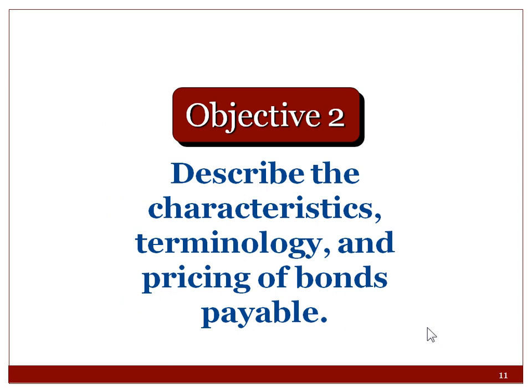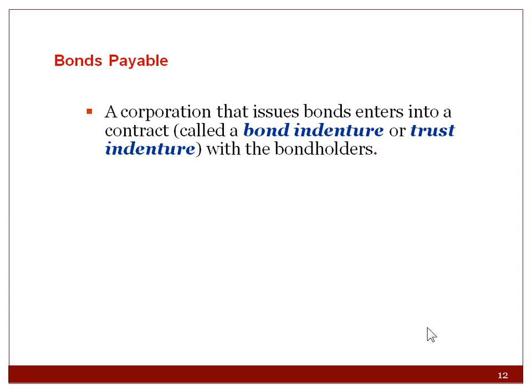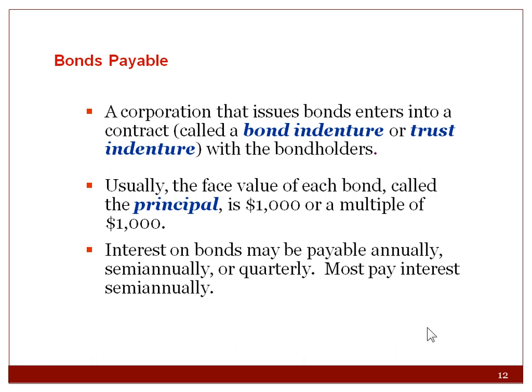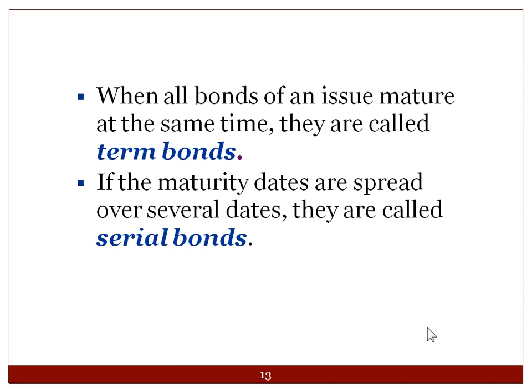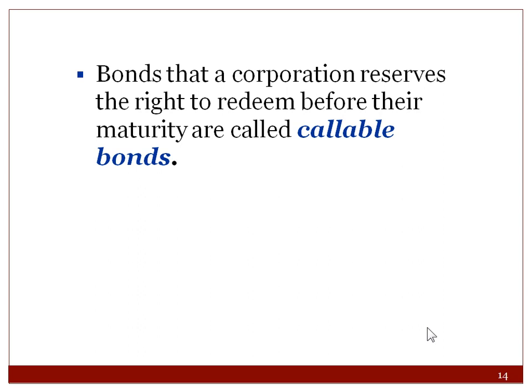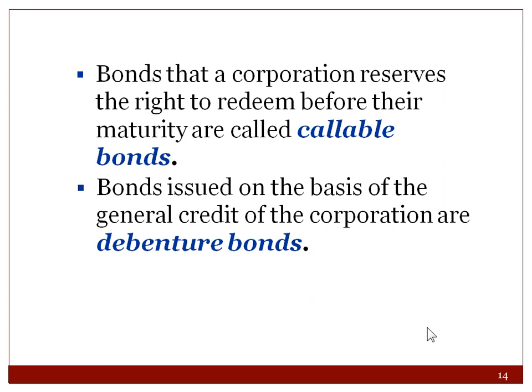Let's describe the characteristics, terminology, and pricing of bonds. A corporation that issues bonds enters into a contract called a bond indenture or trust indenture with the bondholders. The face value is usually $1,000 or multiples of thousands. Interest may be payable annually, semi-annually, or quarterly — most pay semi-annually. Term bonds all mature at the same time; serial bonds have maturity dates spread over several dates. Convertible bonds may be exchanged for other securities, callable bonds can be redeemed before maturity, and debenture bonds are issued on the general credit of the corporation.